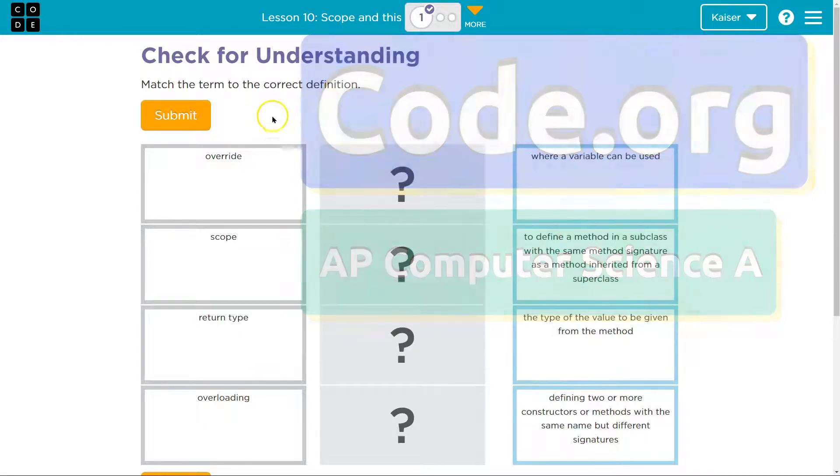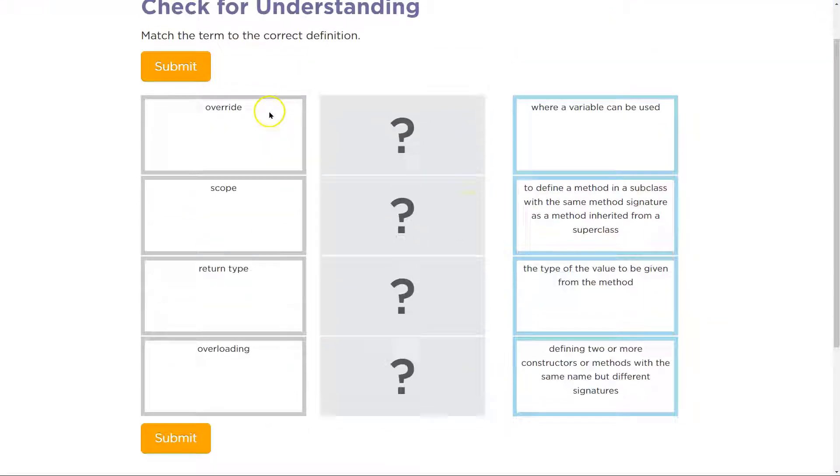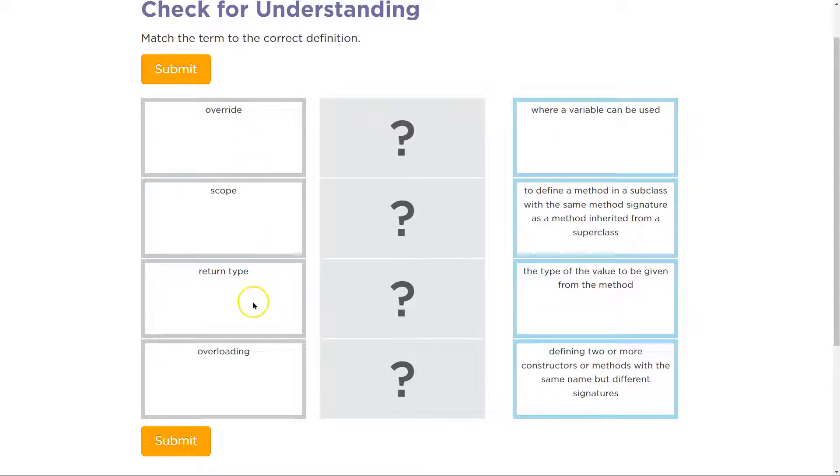This is Code.org, and we have a check for understanding. So let's take a look at these: override, scope, return type, and overloading.